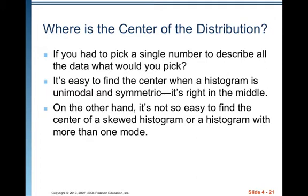Where is the center of the distribution? If you had to pick a single number to describe all the data, what would you pick? It's easy to find the center when a histogram is unimodal and symmetric — it's right in the middle. For skewed histograms or those with more than one mode, people still want one single number for the overall impression. There's the mean and there's the median — both are good values, better in some cases than others — and also the mode. If you're only given a histogram with no numerical values, reporting the mode where the hump is can be helpful.